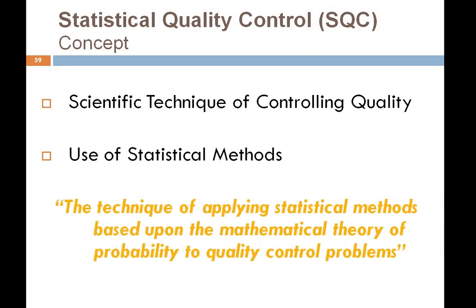When we talk about statistical methods, we join both concepts and we have a proper one-line definition: Statistical Quality Control is nothing but the technique of applying statistical methods, which are based upon the mathematical theory of probability, to the various quality control problems.